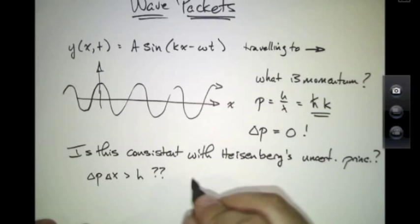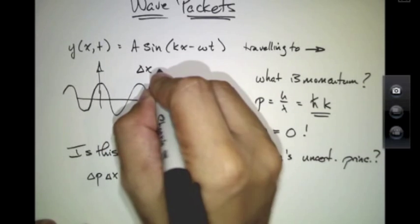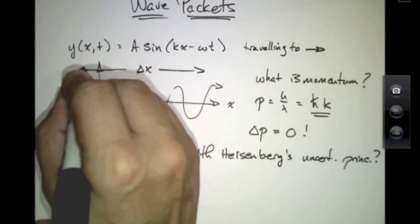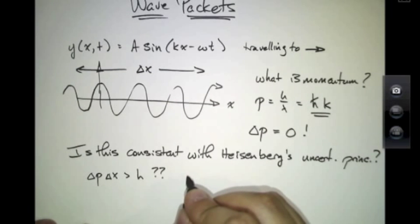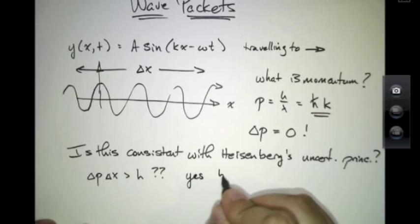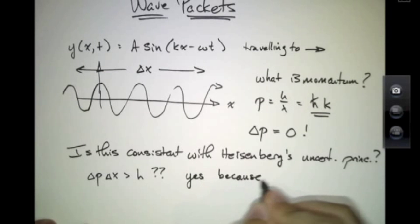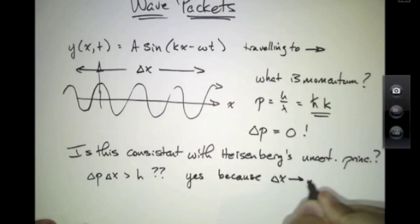So, in this case, delta x, the uncertainty on the location of the particle, is essentially infinite. We have no location for the particle whatsoever. And so, even though delta p is vanishingly small, because we know its momentum, delta x is infinitely big.